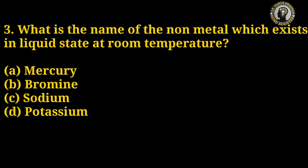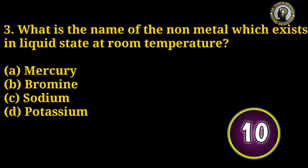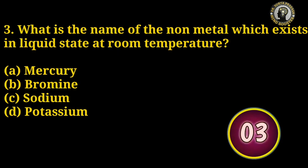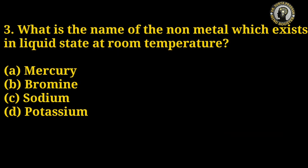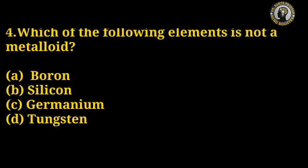Question number 3: What is the name of the non-metal which exists in liquid state at room temperature? Options: mercury, bromine, sodium, potassium. The right answer is B — bromine. Question number 4: Which of the following elements is not a metalloid?